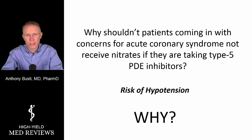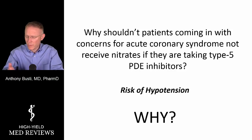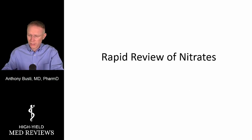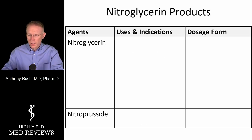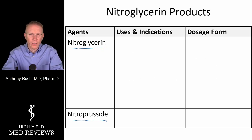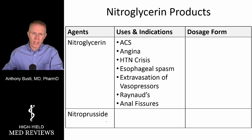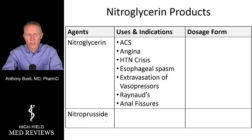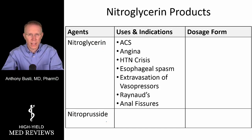In order to answer that question, we need some basic foundational information about these drugs, so let's do a rapid review of the nitrates. In this table, you can see nitroglycerin on one side and nitroprusside on the other. Looking at nitroglycerin, we use it not only for acute coronary syndrome, but for angina — both stable and unstable.